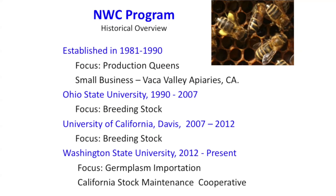More recently we've imported germplasm — basically just bringing in semen from some of the original range of Carniolans: Slovenia and Germany. Germany isn't native to them, but they have a good breeding program working with Carnica. That was just to expand the gene pool of the population, given its time frame.